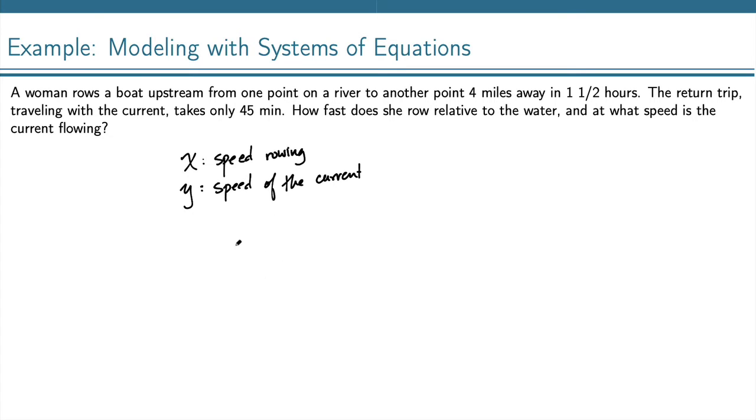Now we're going to write an equation for each of the relationships we have. Taking speed, we know we can multiply speed by time to get distance. We have a distance of 4 miles, and that takes an hour and a half when we're